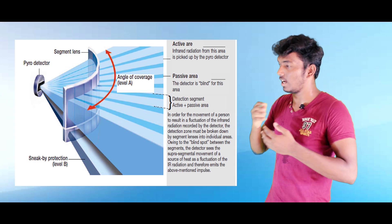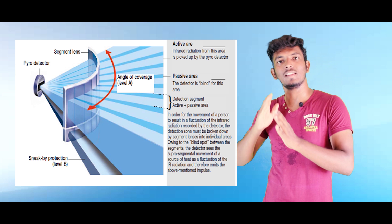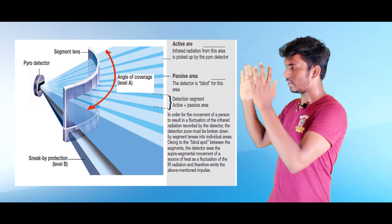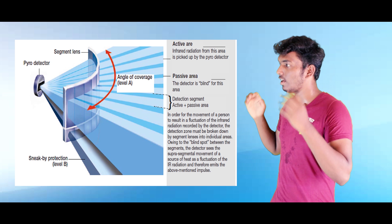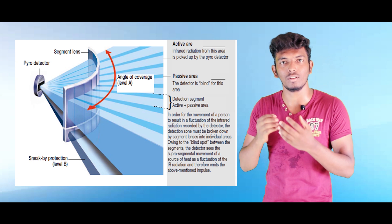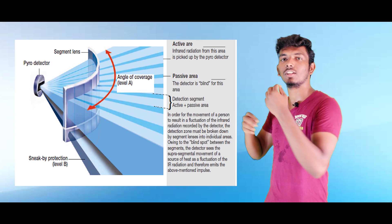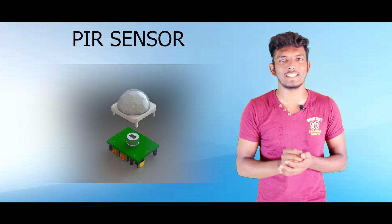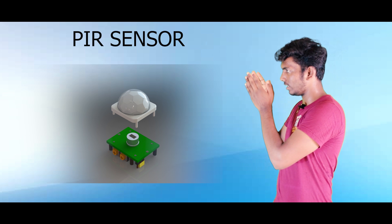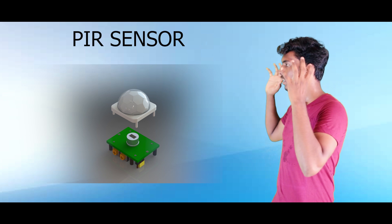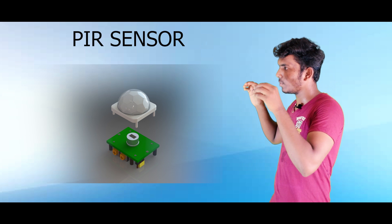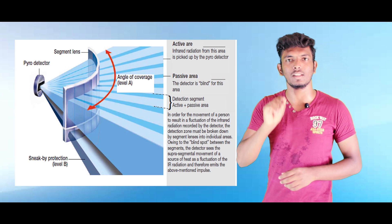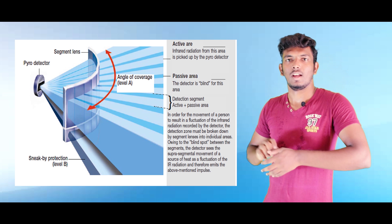The IR radiation is applied so it can be directed. There is a Fresnel lens — it takes IR radiation and focuses it. The radiation is not in any one direction by default; it comes from different directions. Now, when heat radiation is detected, if you look at that Fresnel lens, it focuses all IR radiations in one direction toward the pyroelectric sensor.